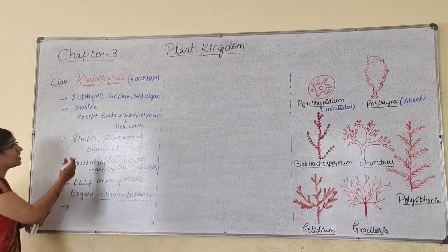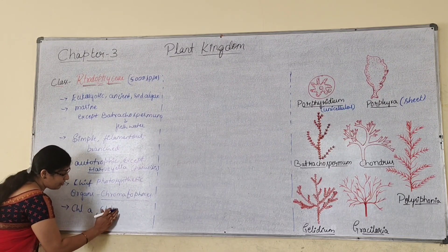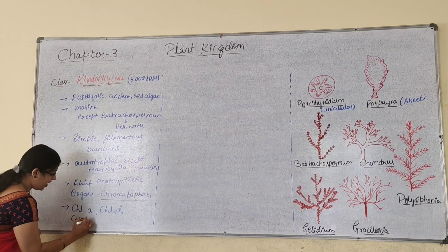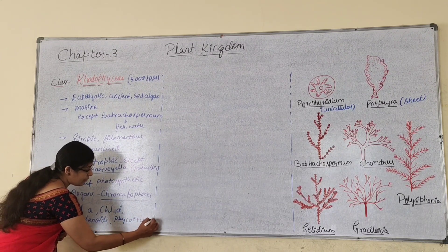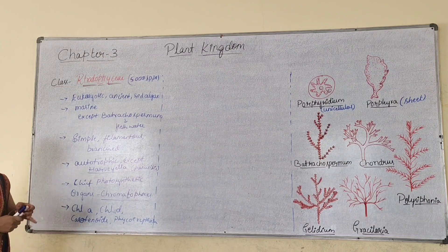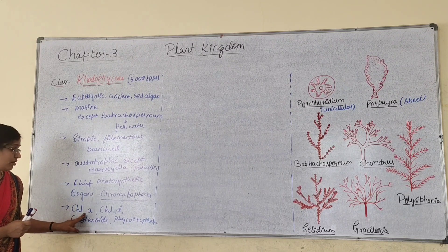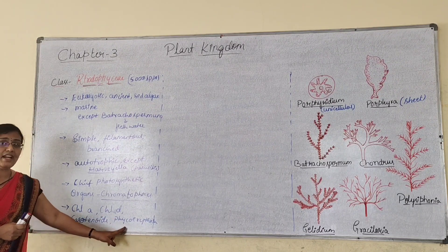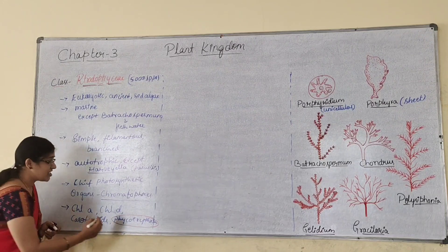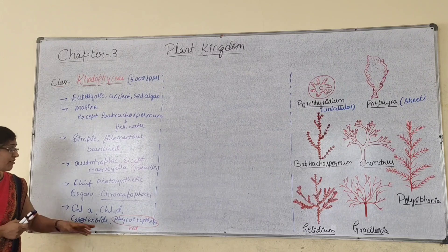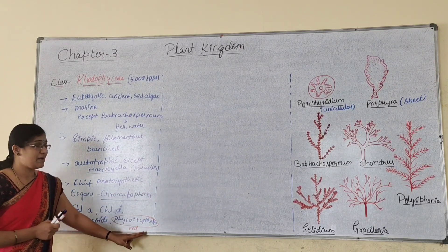The chief photosynthetic pigments present in autotrophic members are chlorophyll A, chlorophyll D, along with some carotenoids, and phycoerythrin. This phycoerythrin is a phycobilin. It is a water-soluble pigment which gives red color to the algae. Due to the presence of abundant phycoerythrin, these algae appear red in color.